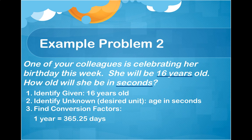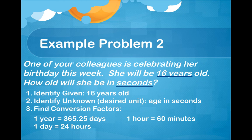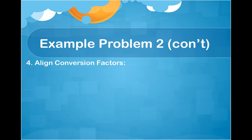Here are the conversion factors we need: 1 year equals 365.25 days; 1 day equals 24 hours; 1 hour equals 60 minutes; 1 minute equals 60 seconds. Now let's align these conversion factors and set up that long multiplication problem. We start with what we are given: 16 years. Unlike the last problem, we can't make one single jump — we have to make several mini jumps to get to our final answer.